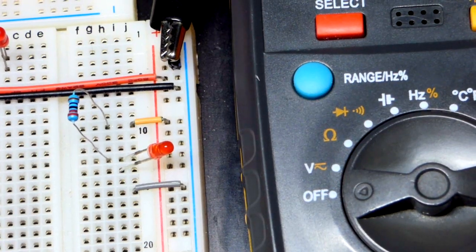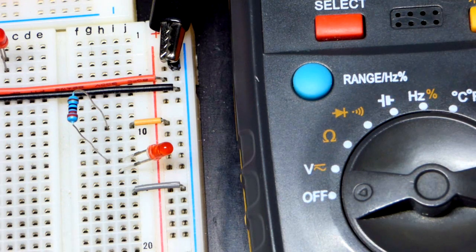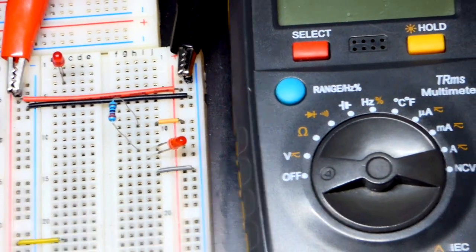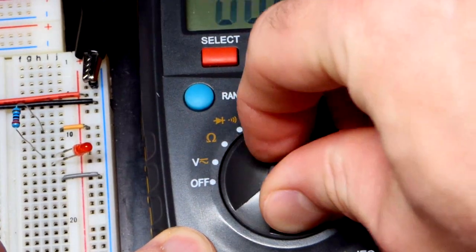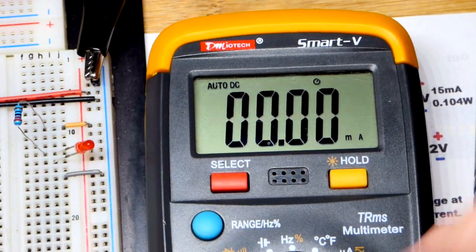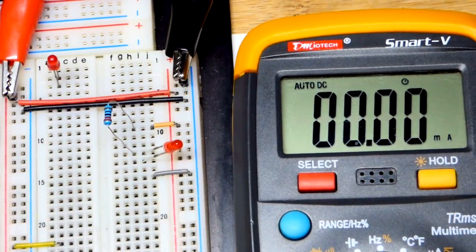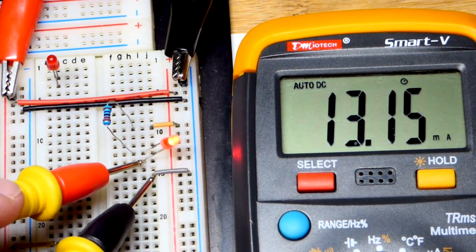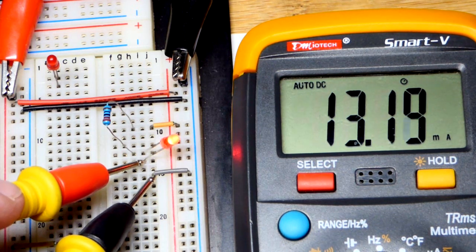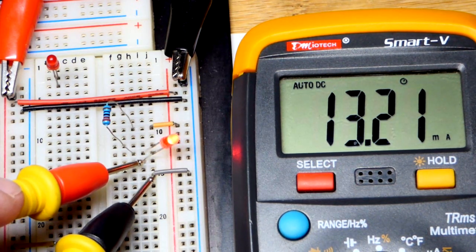We just open up the circuit so we can measure current. It has to go through the meter as well. We'll set the meter to measure milliamps right there, and we just have to insert that into the circuit. And we will have a more accurate current. You can see 13.2 it looks like.